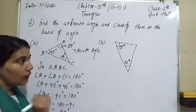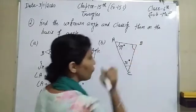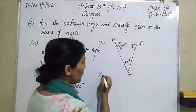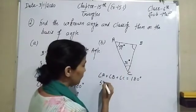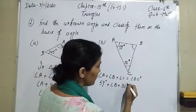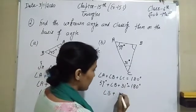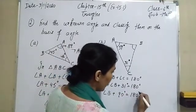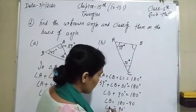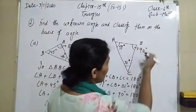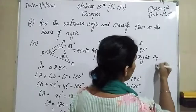Now in the second triangle, let the angles be A, B, and C. We have to find angle B. Using the angle sum property: angle A is 59 degrees, angle B we have to find, and angle C is 31 degrees, all equal to 180 degrees. So 59 plus 31 is 90, and angle B equals 180 minus 90, which is 90 degrees. Since angle B is 90 degrees, that is a right angle.